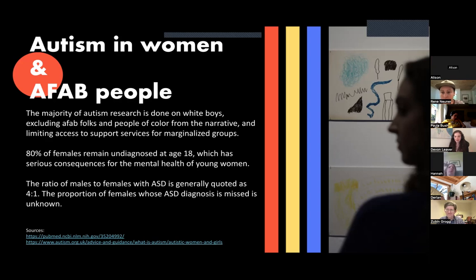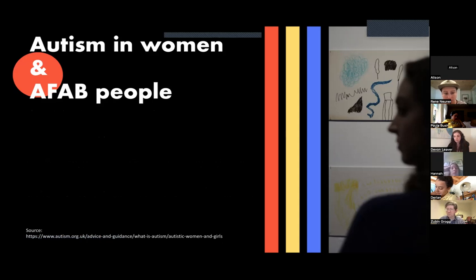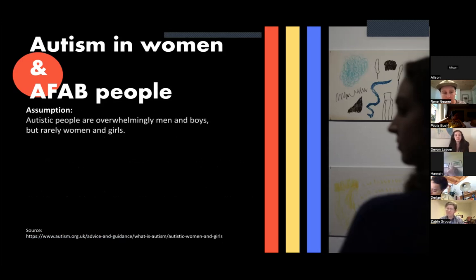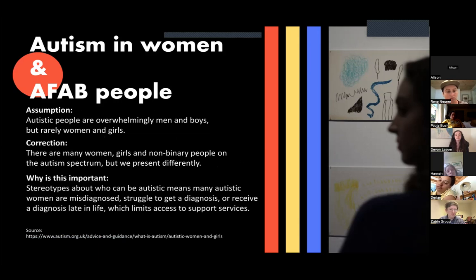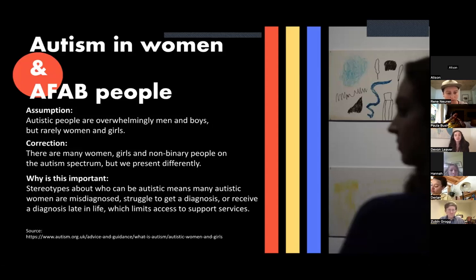You basically have this giant feedback loop — not just in media, but also in the medical system and the research that goes into it. These structural biases lead to a lot of assumptions, one of them being that autistic people are overwhelmingly men and boys, but rarely women and girls. There are actually many women, girls, and non-binary people on the autism spectrum, but we all present differently. Stereotypes about who can be autistic means many autistic women are misdiagnosed, struggle to get a diagnosis, or receive a diagnosis late in life — limiting access to support services.